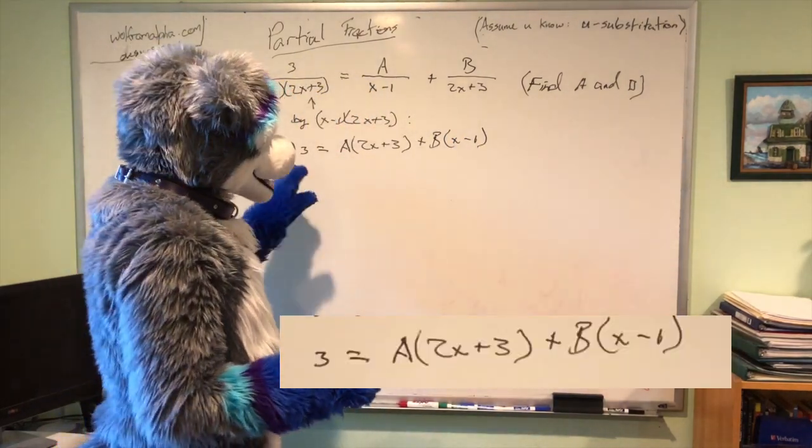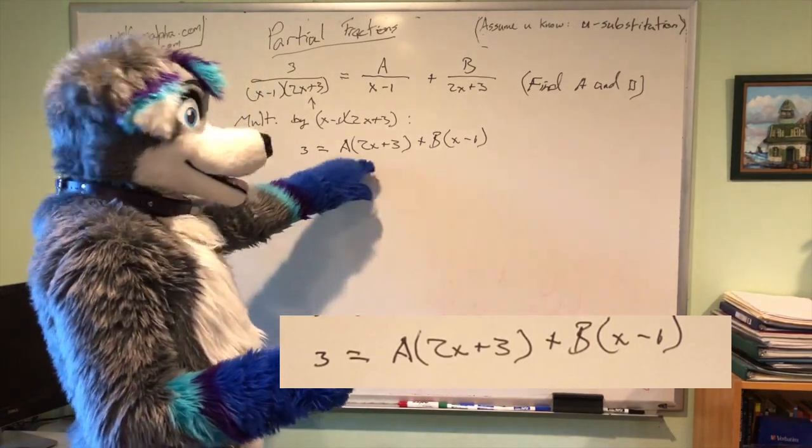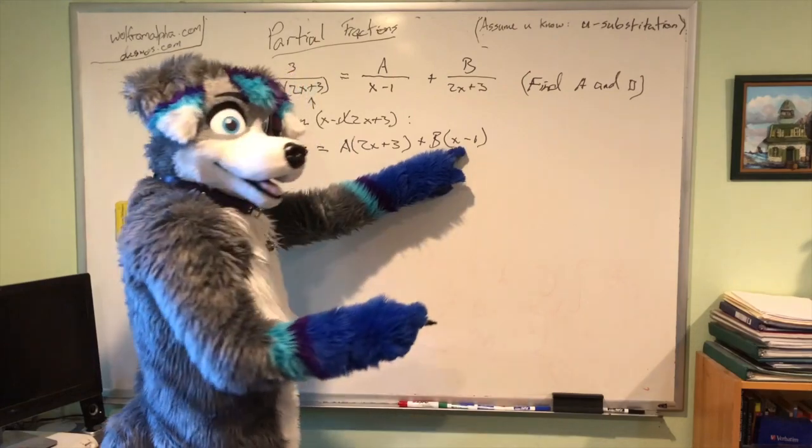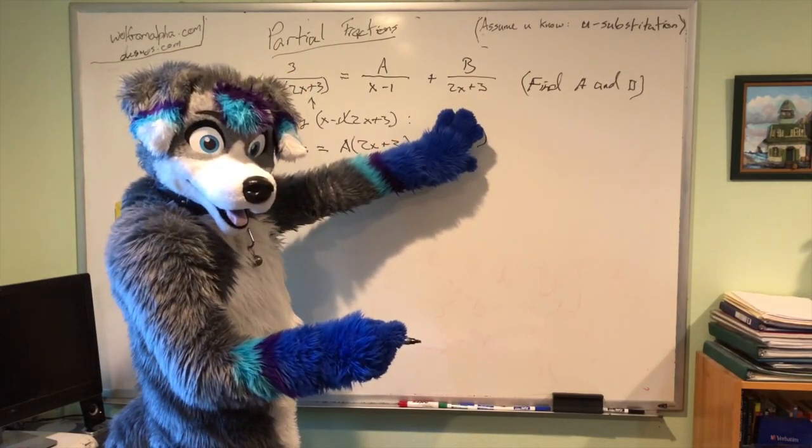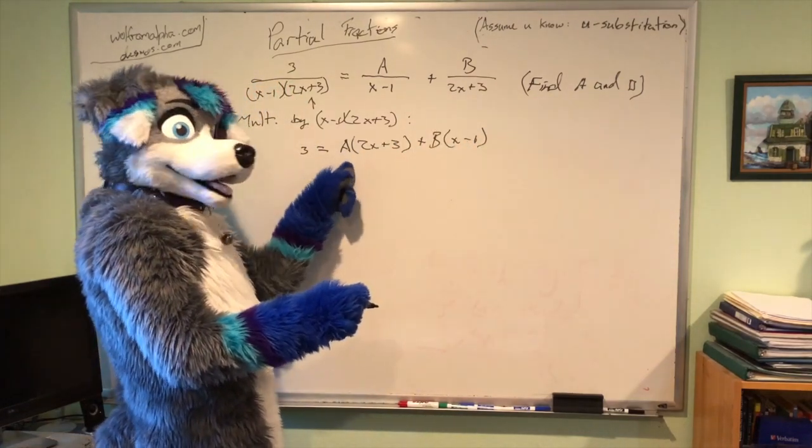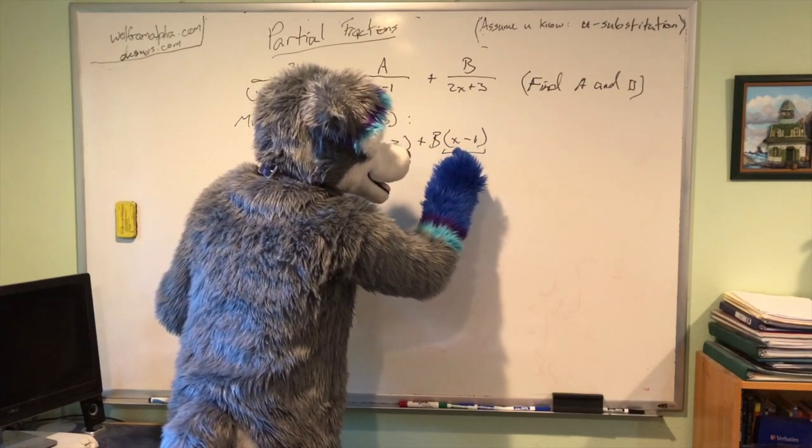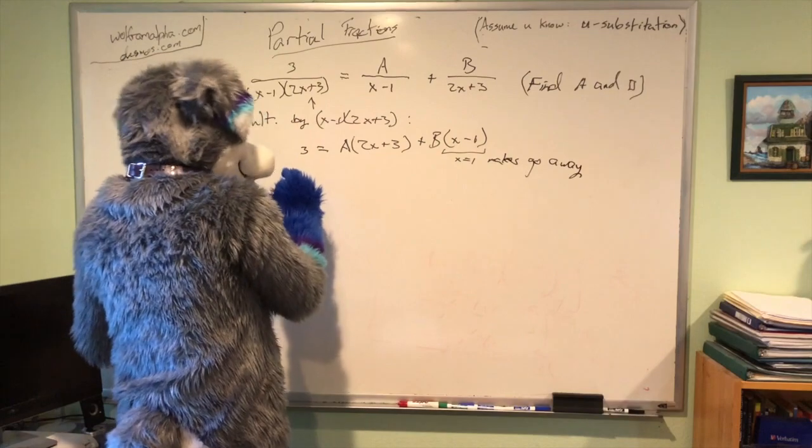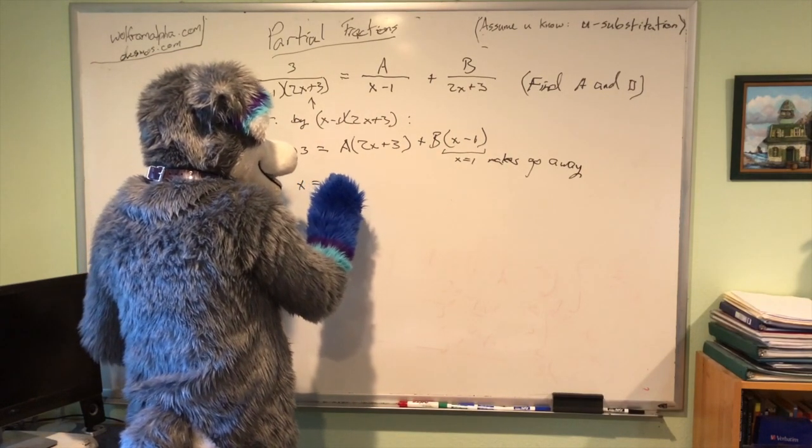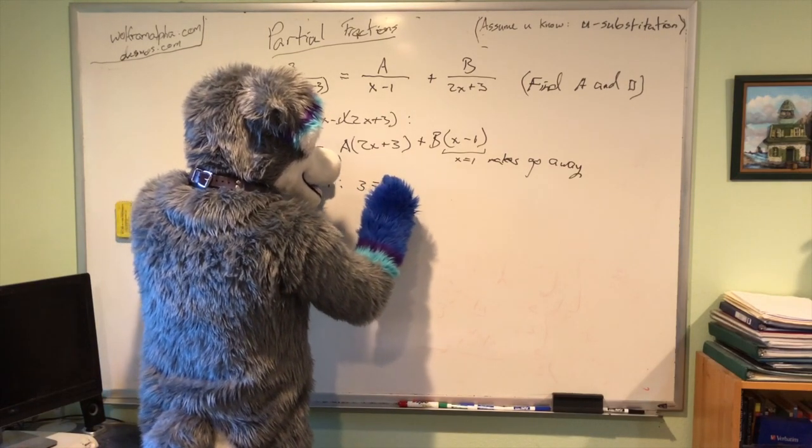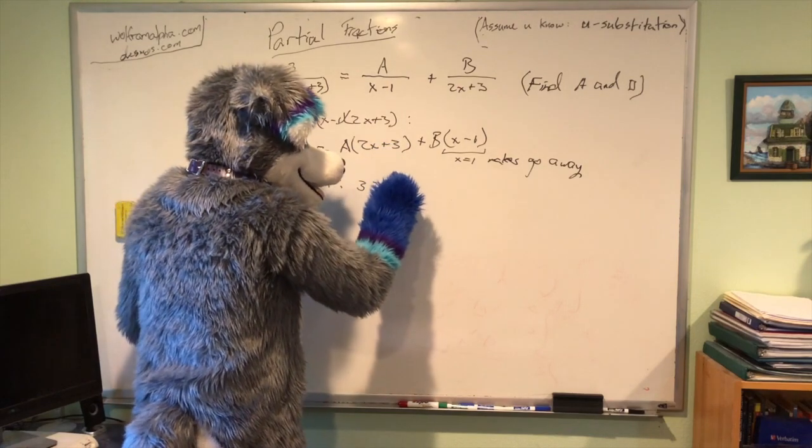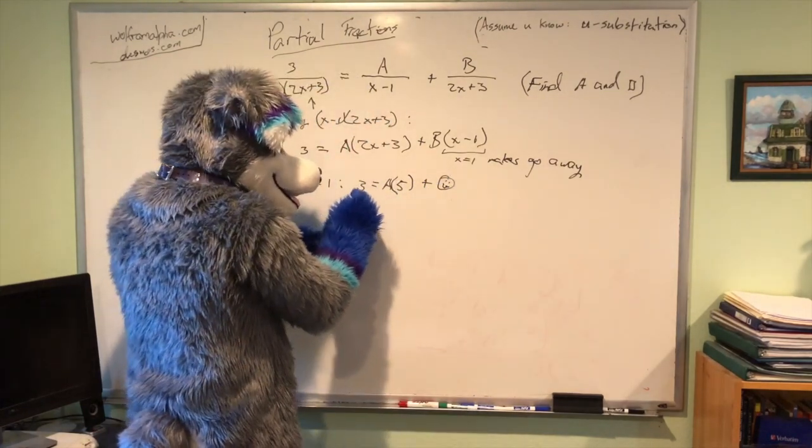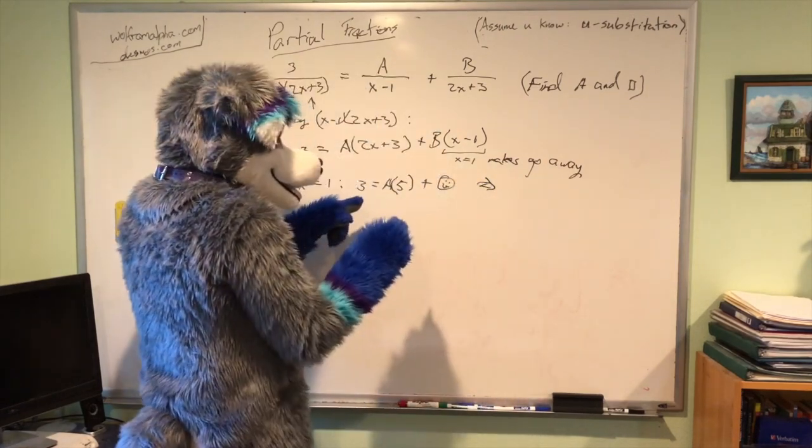There are several ways you can go from here. In this case, the easiest way to go is, this is supposed to hold for any value of x, so pick the value of x that works for you. For example, if I were to put in a 1 for x, this whole term goes away, right? Because anything times 0 is 0. And then we can solve for A. So, x equals 1 makes it go away. So, if I plug in a 1 for x, I get 3 equals A, 2 plus 3 is 5. And then this is just a 0. So, that means that A is 3 fifths.